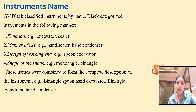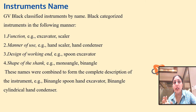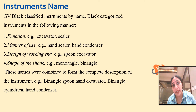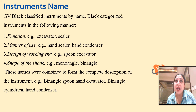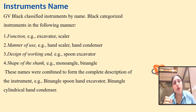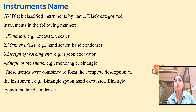G.P. Black also classified instruments by name — a name by which the instrument could be completely described. It could tell the function of the instrument, whether it was an excavator, a scaler, a condenser, or a burnisher; the manner of use, whether used with hand or rotary; the design of the working end, for example a spoon excavator has a spoon-shaped working end or a ball burnisher has a ball-shaped working end; and the shape of the shank, whether it is mono-angled or bi-angled. He combined all these words together to formulate the name.